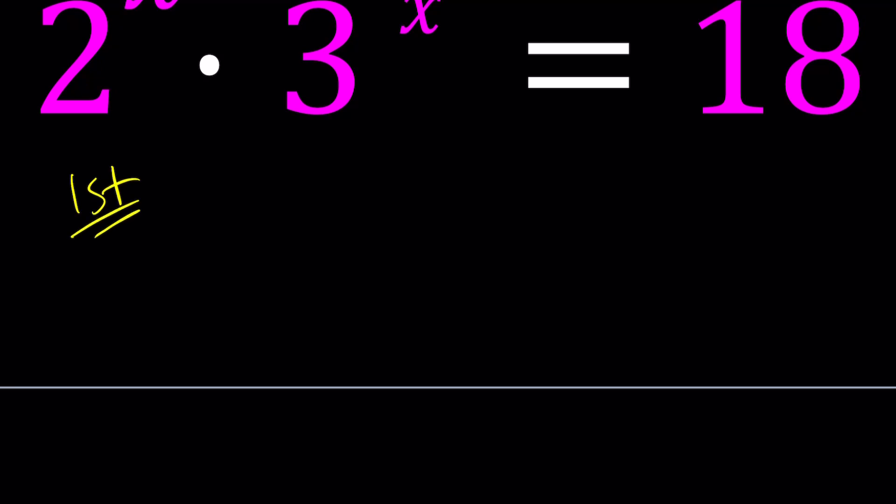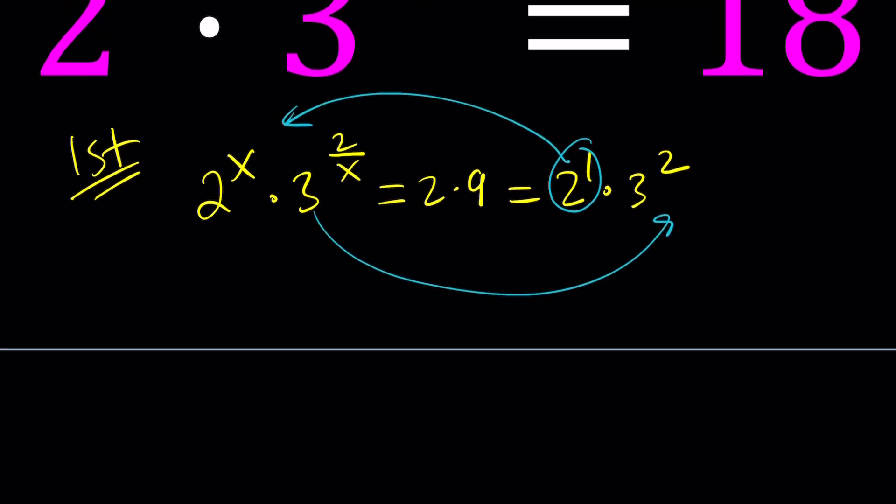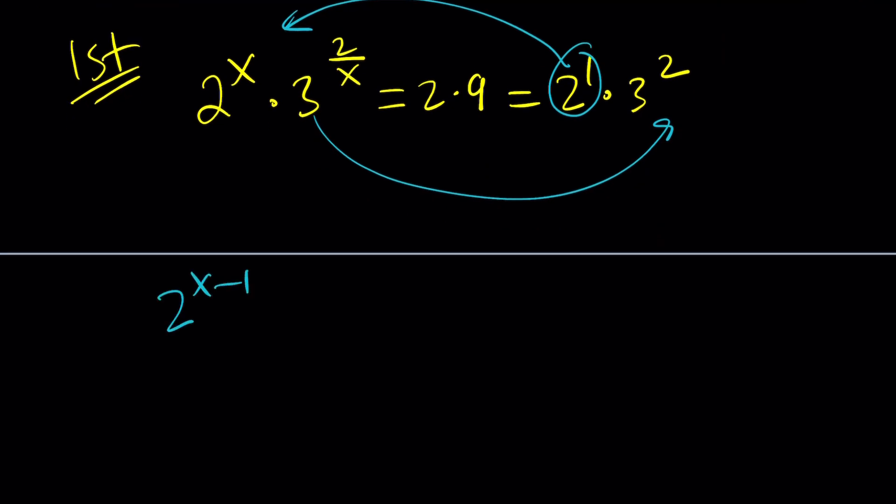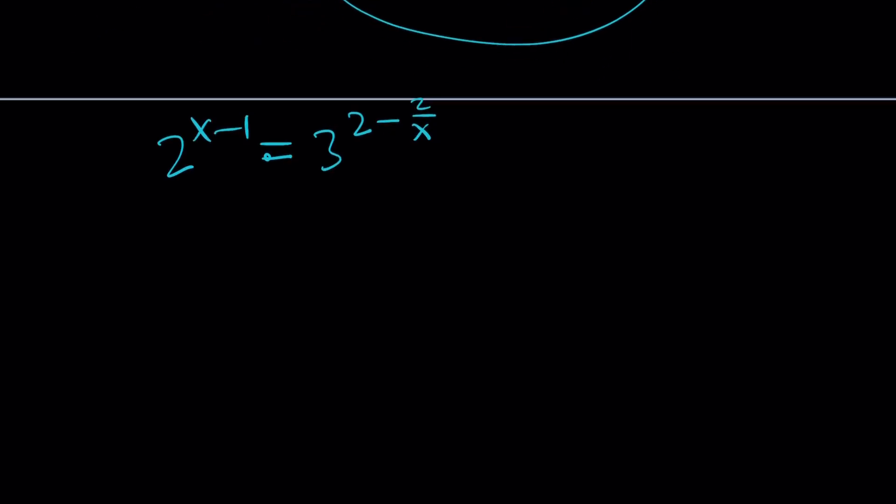So for my first method, I'm going to break down the 18 and write it as 2 times 9. And 2 can be written as 2 to the first power and 9 can be written as 3 to the second power. Then I'm going to bring the powers of 2 together. So let's bring this to the left and this to the right. It's going to be division, so we're going to get 2 to the power x minus 1 equals 3 to the power 2 minus 2 over x. So we kind of got something like this: 2 to the power something equals 3 to the power something else.